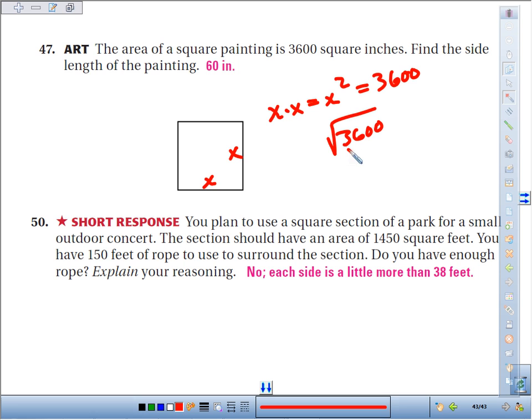Well, you could break it down. Think of the square root of 3,600 is 6, and two zeros comes from 10. So x is going to equal, or the side length is going to equal, 60 inches.